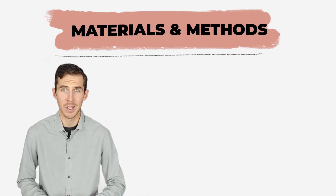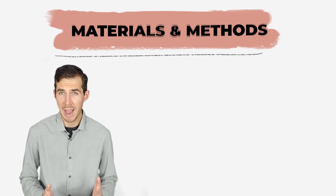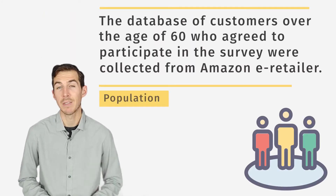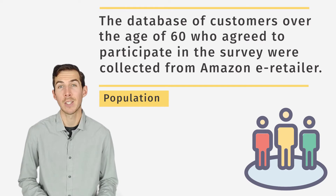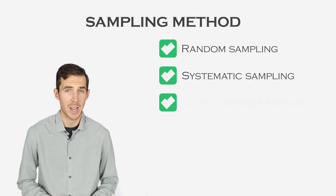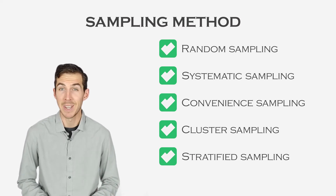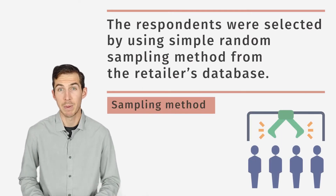The materials and methods section should be written very clearly with a detailed account of the procedure that was followed in the experiment. The information should be adequate for anyone desiring to replicate the study in the future. First, you have to explain how the participants were recruited and clearly define your target population. In our case, we decided to use customers over the age of 60 from an online shopping website. Then we have to explain how we selected participants. There are many different types of sampling methods — for example, random sampling, systematic sampling, convenient sampling, cluster sampling, and stratified sampling. In our case, we used a random sampling method, which means we randomly picked participants from the database.